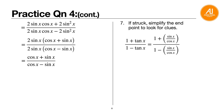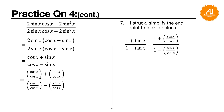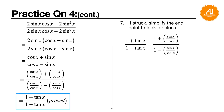If stuck, look at the endpoint: (1 plus tangent x) over (1 minus tangent x). Tangent equals sine over cosine, so the endpoint becomes (1 plus sine over cosine) over (1 minus sine over cosine). Comparing this to (cosine x plus sine x) over (cosine x minus sine x), divide all four terms by cosine x. Cosine over cosine gives 1, sine over cosine gives tangent, completing the proof.